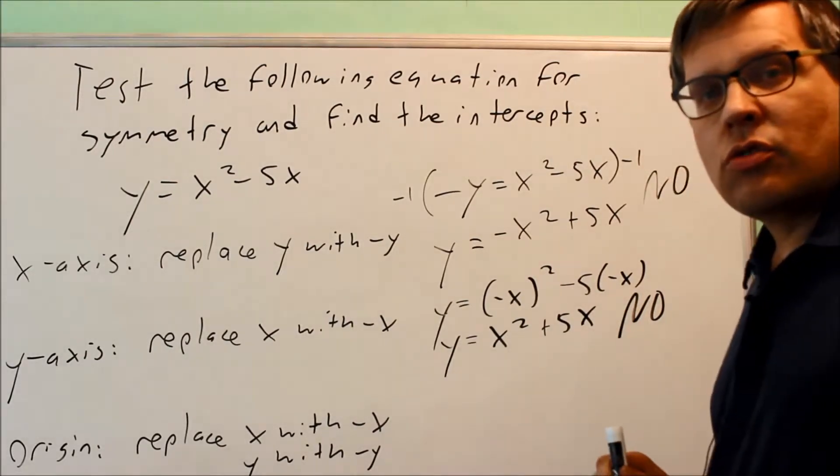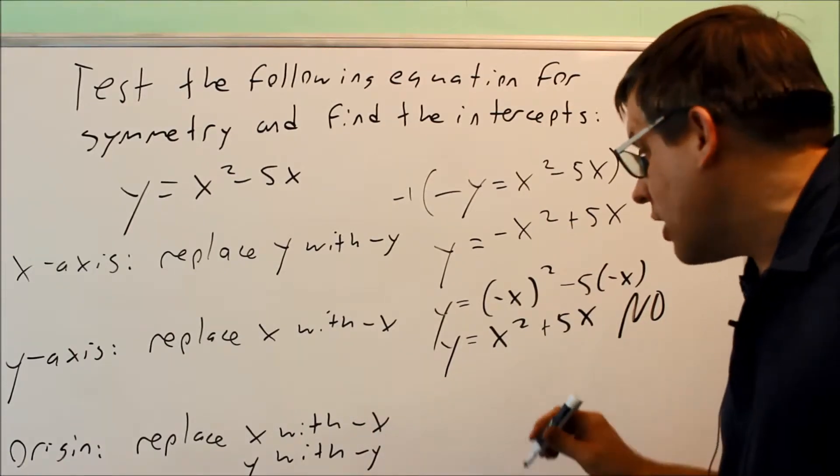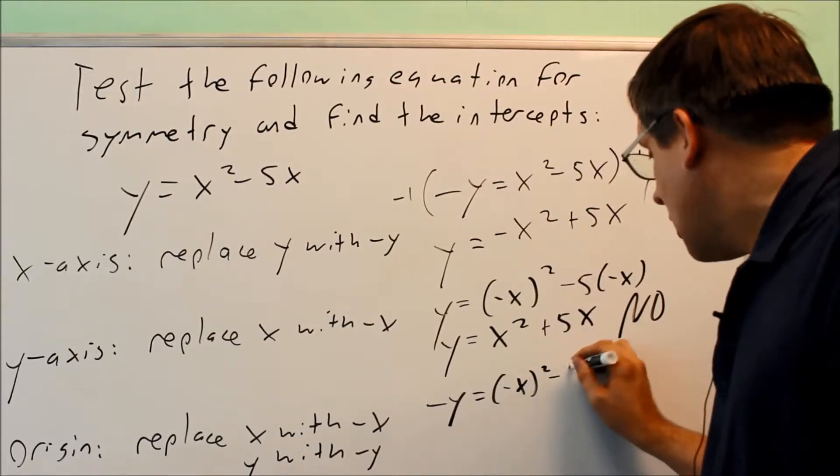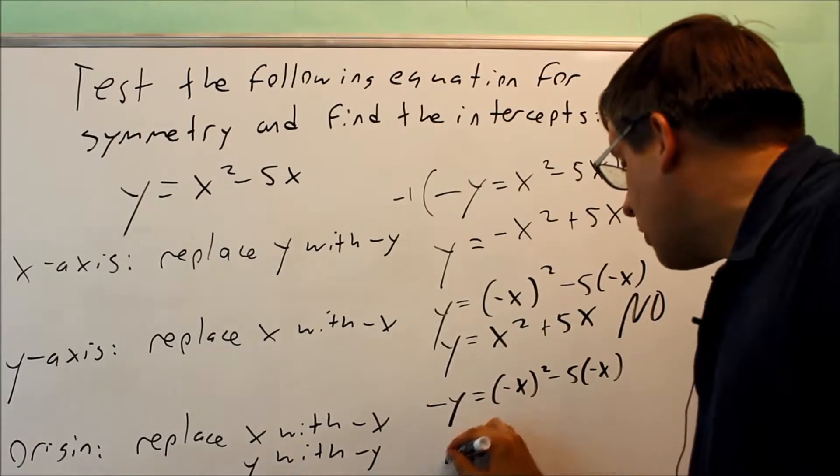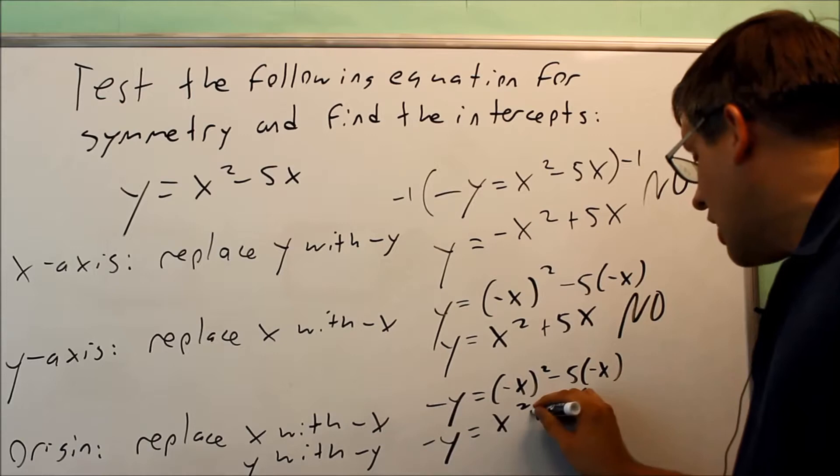For origin symmetry, we replace both x with -x and y with -y. This gives us -y = (-x)² - 5(-x). Simplifying, we get -y = x² + 5x.